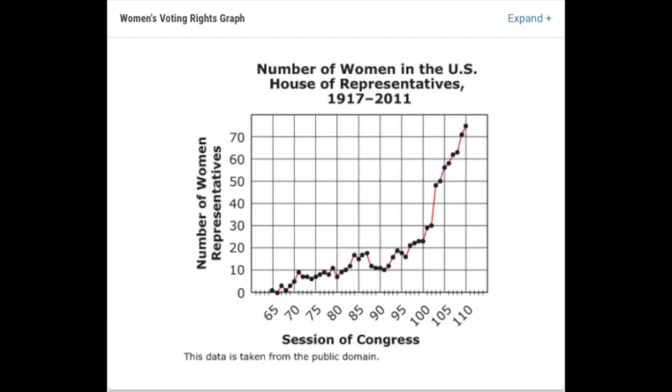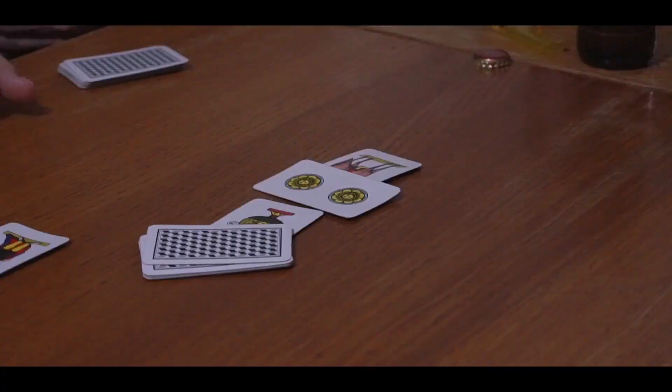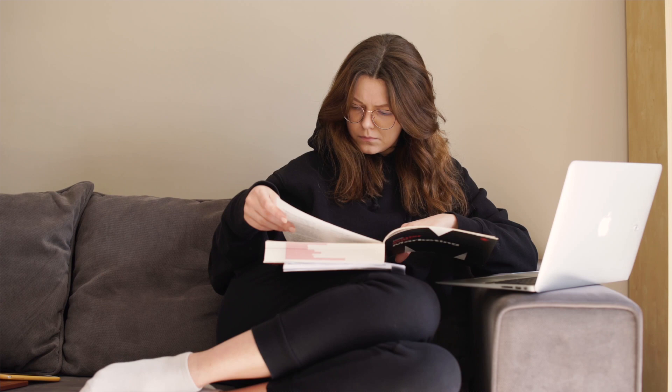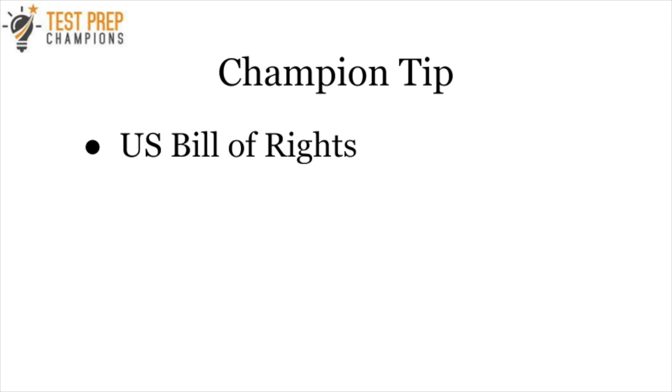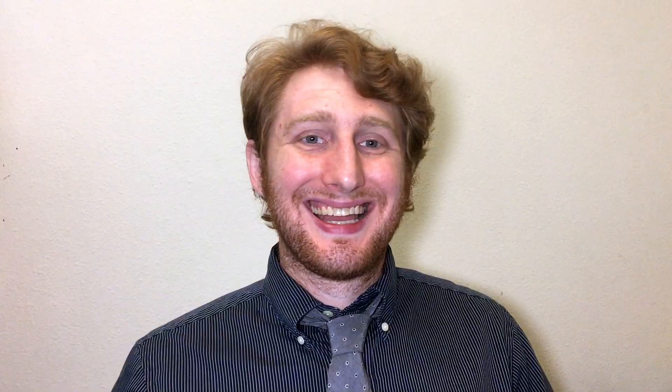Tip number eight: be familiar with how to read basic graphs. This will really help you out with questions on the test. Tip number nine: understand that the tests are randomized, meaning nobody can predict with 100% certainty which topics you'll get. However, topics like the U.S. Bill of Rights, the U.S. Constitution, and the process of how a bill becomes a law tend to show up often, so it's worth taking time to familiarize yourself with these topics.